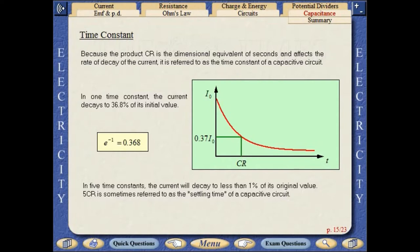Because the product CR is the dimensional equivalent of seconds and affects the rate of decay of the current, it is referred to as the time constant of a capacitative circuit. In one time constant, the current decays to 36.8% of its initial value.